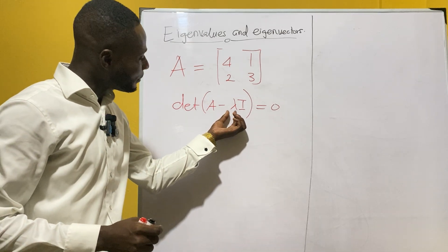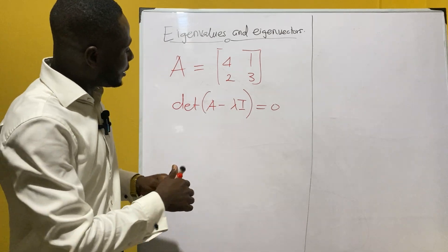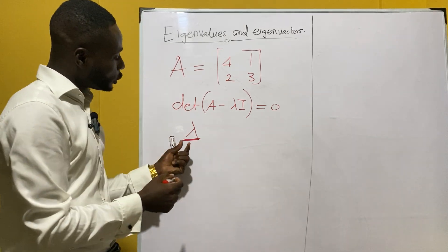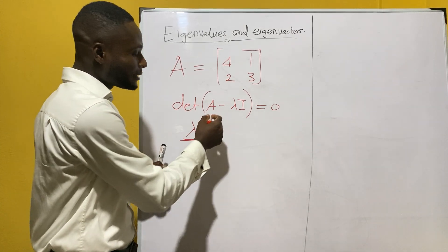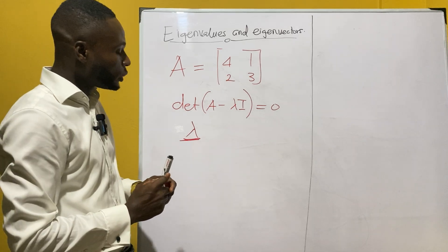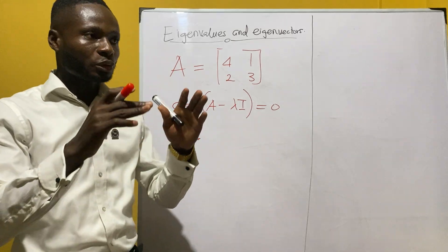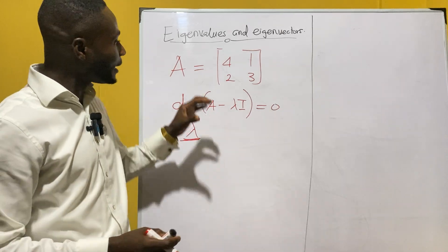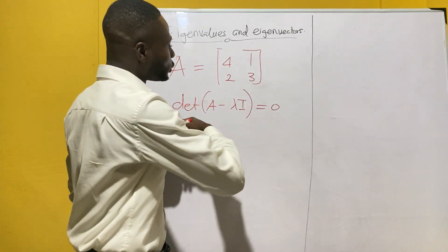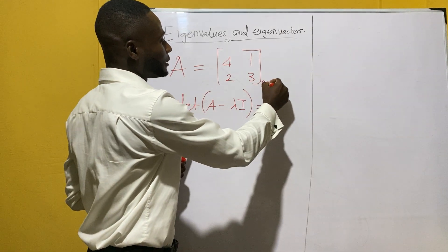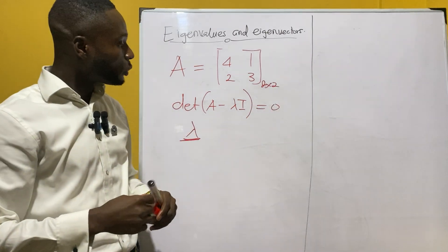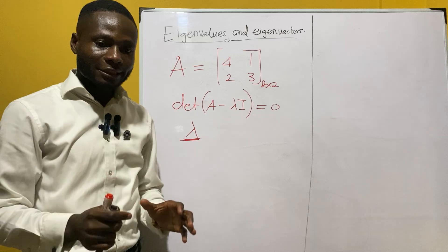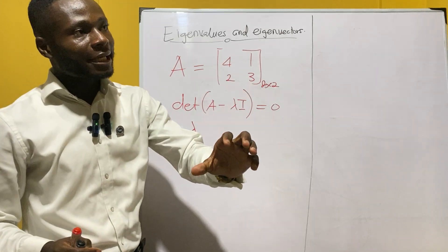The identity matrix should have the same size as the matrix given. So if you have a two by two matrix, you form a two by two identity matrix.